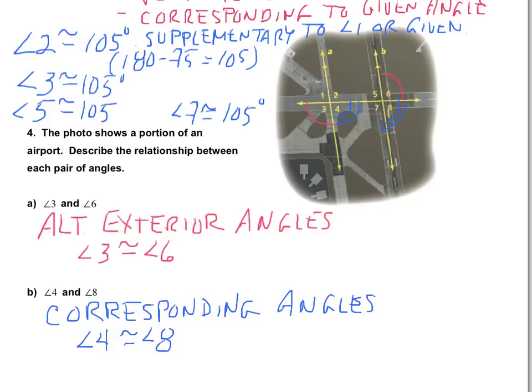That covers parallel lines cut by a transversal. It is very important that we can find the angle measurements using these different angle pairs, but it is also important that we understand what type of angles we have — whether they are vertical, corresponding, supplementary, alternate exterior, or alternate interior angles.